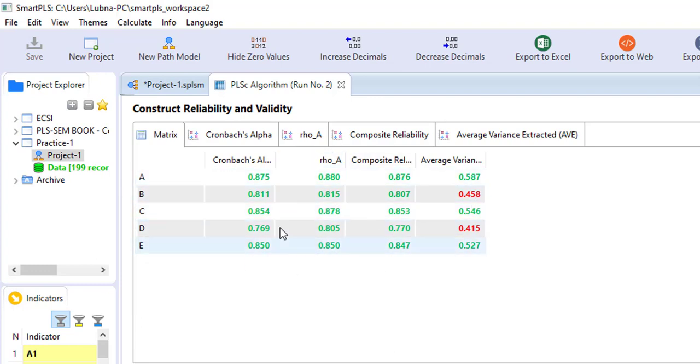Green values are basically those values which are meeting the criteria, the benchmark, and the red values are not meeting the criteria. We will be discussing later on in this video what are the criteria for respective measures.